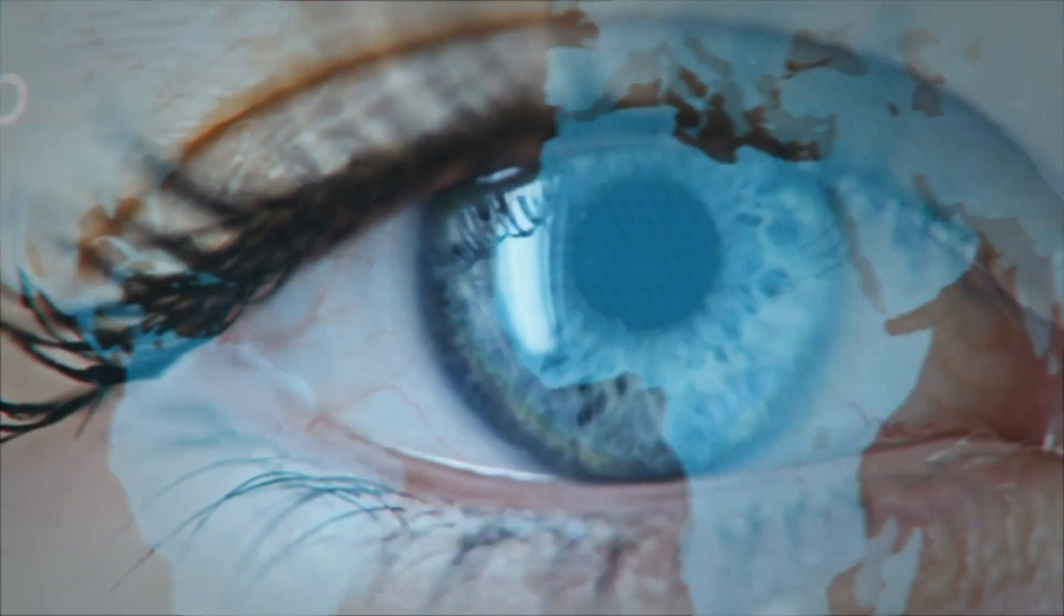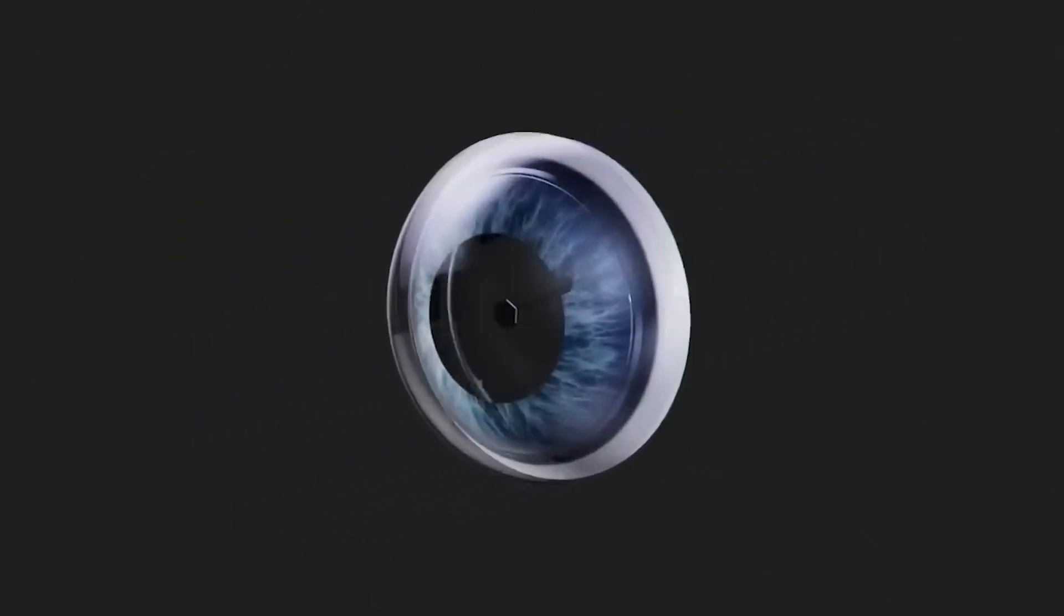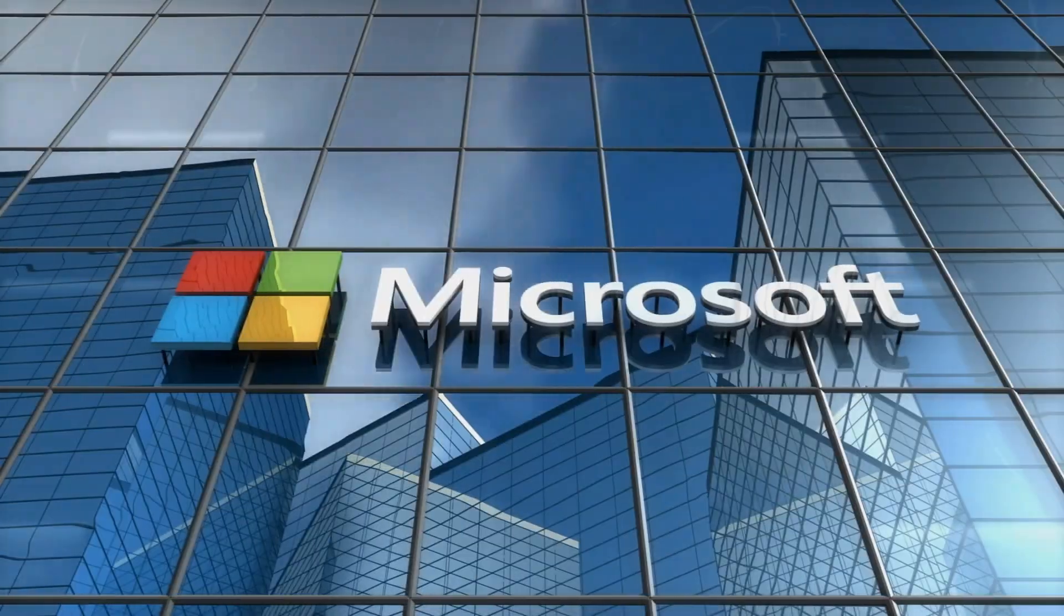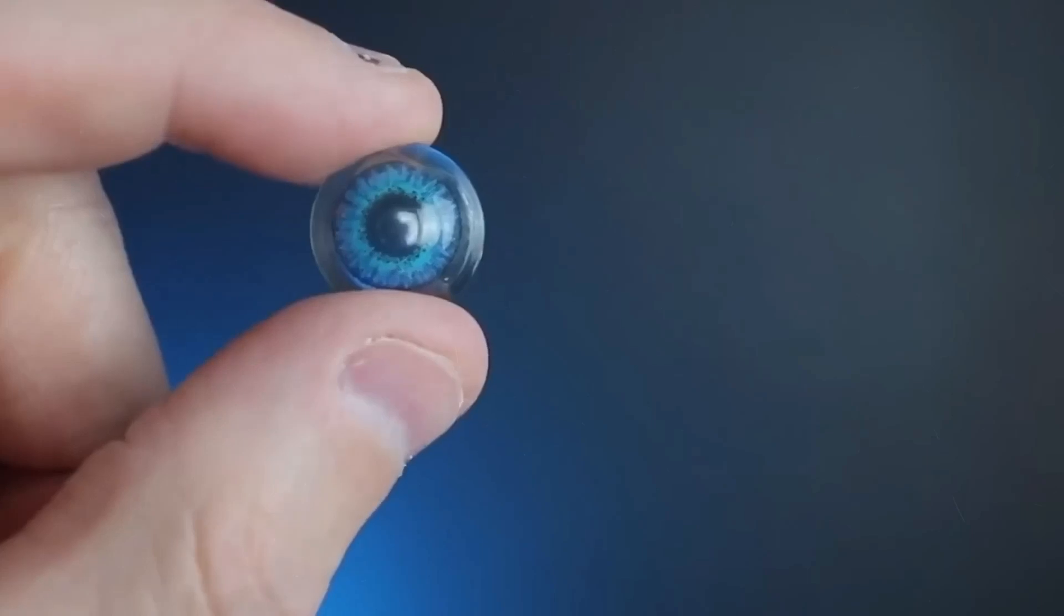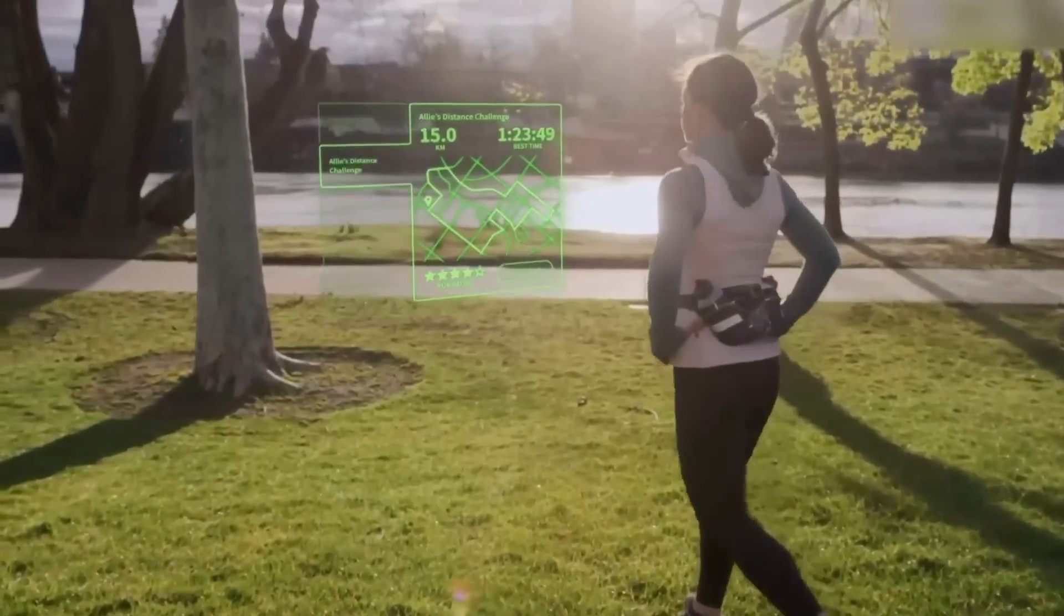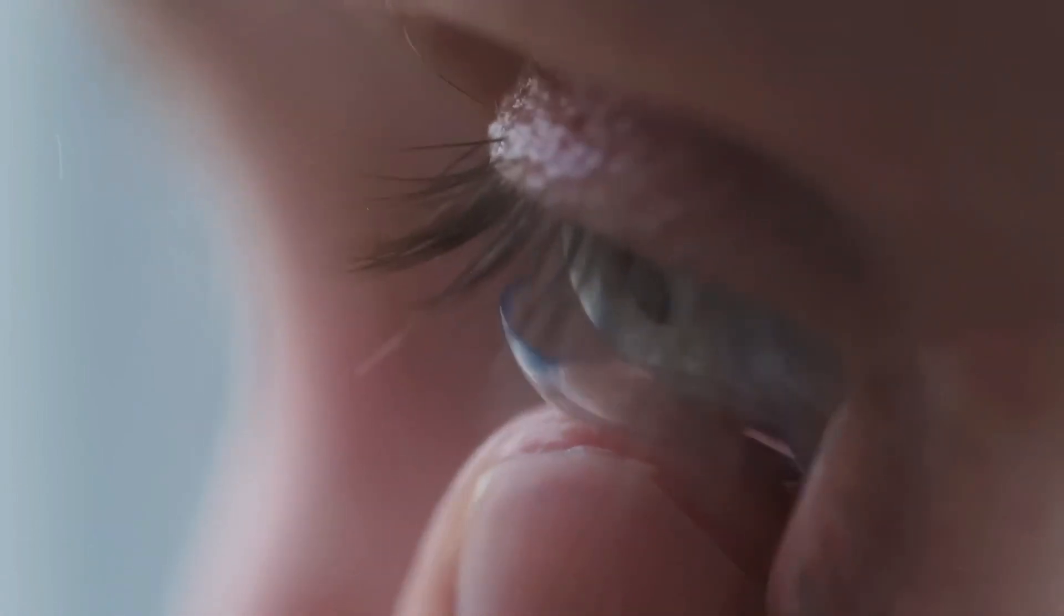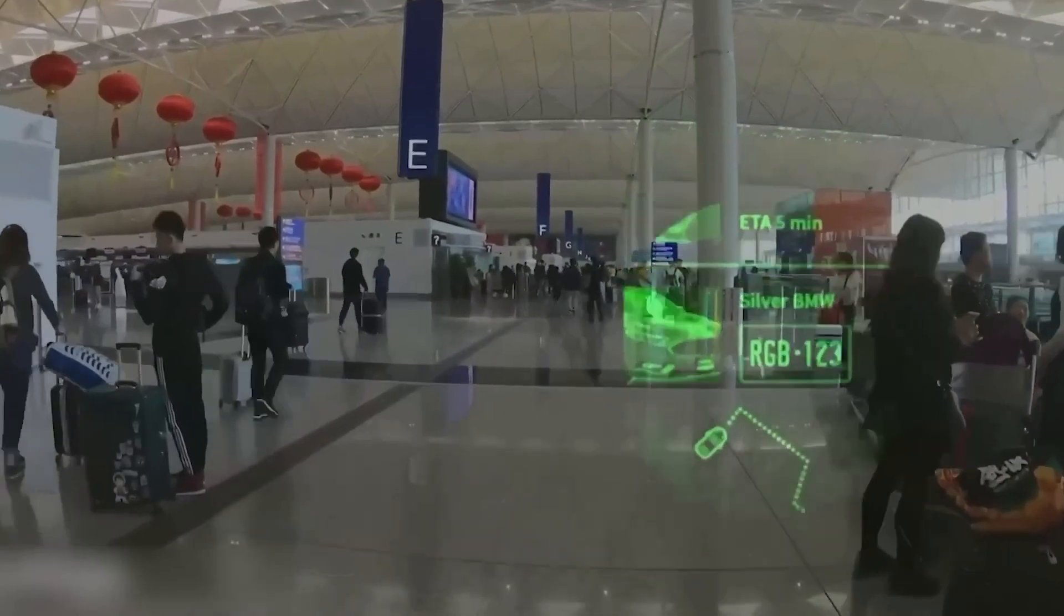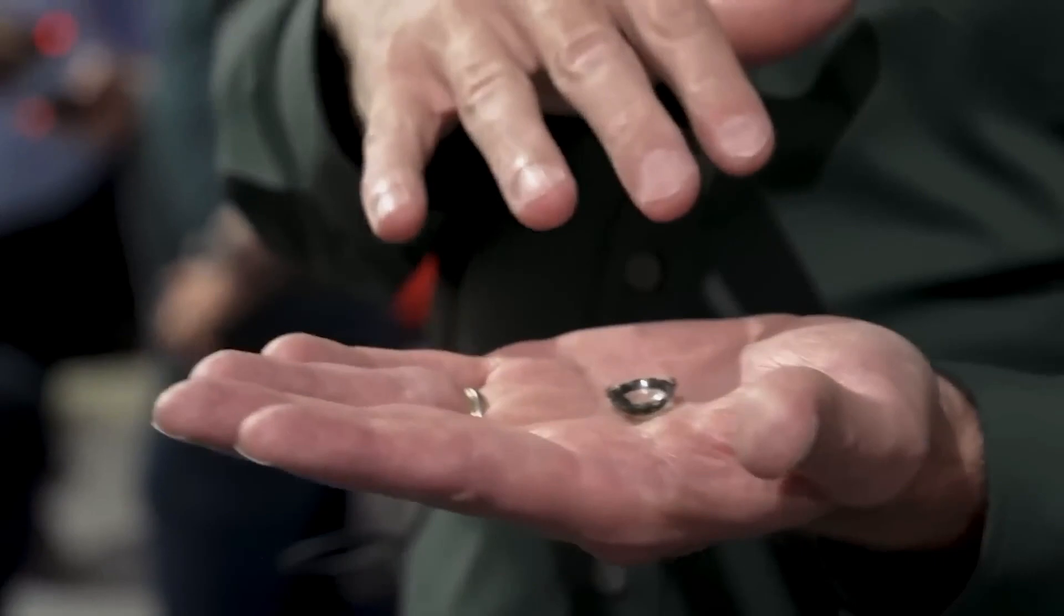Imagine a world where you no longer need to pull out your smartphone to check notifications. Mojo Vision, a company backed by tech giants like Apple, Google, Amazon, and Microsoft, is working on making this a reality. These smart contact lenses aim to reduce our dependence on screens. By simply looking to the corner of your eye, you can activate an interface that provides you with real-time information. Say goodbye to constantly checking your phone during conversations.